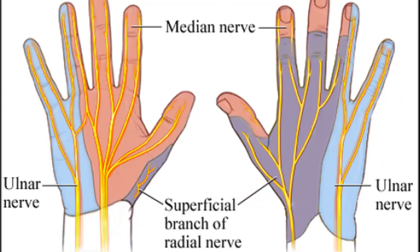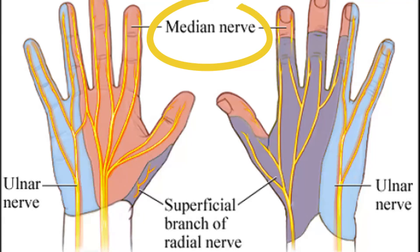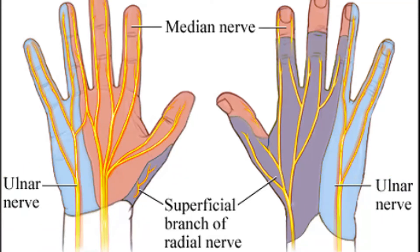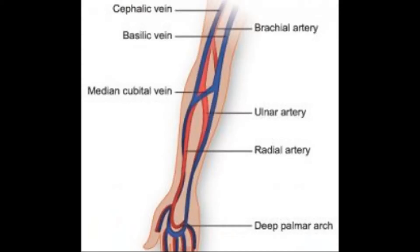For the innervation: on the medial side, the first three and a half fingers including the thumb have the median nerve. For the last one and a half fingers you have the ulnar nerve, and for the posterior hand you have the radial nerve.